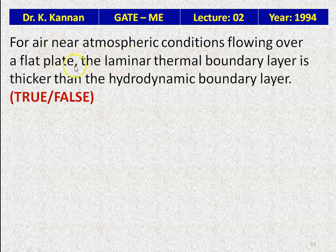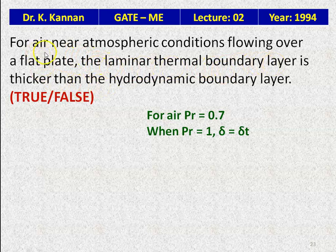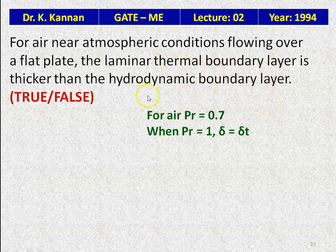For air near atmospheric conditions flowing over a flat plate, the laminar thermal boundary layer is thicker than the hydrodynamic boundary layer — this is false. For air, the Prandtl number is approximately 0.7, and when Pr ≈ 1, the thermal boundary layer thickness is approximately equal to the hydrodynamic boundary layer thickness, not greater.